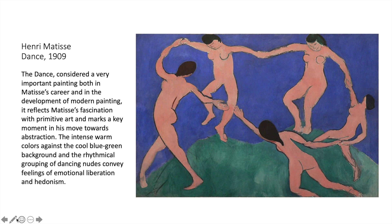This is The Dance from 1909 — Woman with a Hat was from 1905. The Dance is considered a very important painting, both in Matisse's career and in the development of modern painting. It reflects Matisse's fascination with primitive art and marks a key moment in his move towards abstraction. The intense warm colors against the cool blue-green background and the rhythmical grouping of dancing nudes convey feelings of emotional liberation and hedonism. This painting is often compared to Igor Stravinsky's The Rite of Spring. For the first time we have painting beginning to do something that it was already accepted that music could do — it was accepted that music could be abstract, that music could generate an emotional response just based on sounds, based on abstractions — and we now have painting being thought of in the same way.